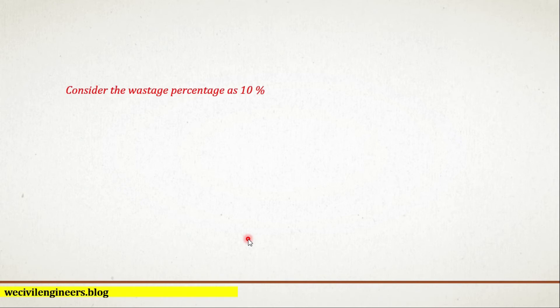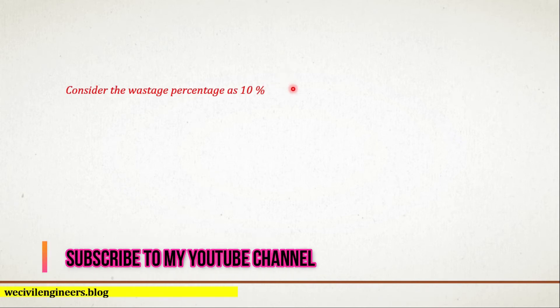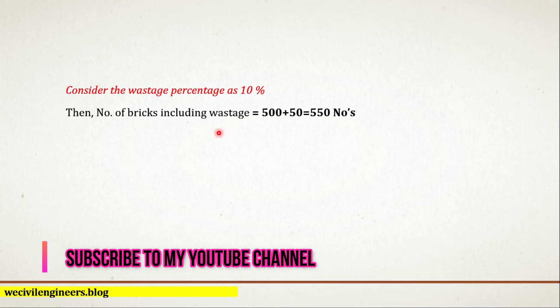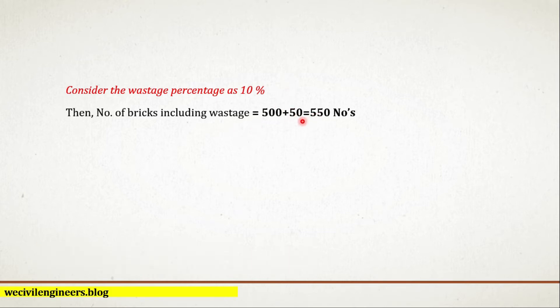Let's say the percentage of wastage at the site is 10%. Then the number of bricks including wastage equals 500 plus 50. This 50 is 10% of 500. Adding these two values gives 550 numbers. So if the size of brick is 190 mm by 90 mm by 90 mm, then you need 500 bricks, or 550 including wastage.